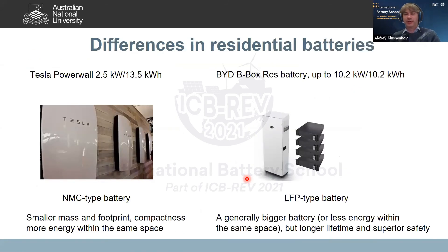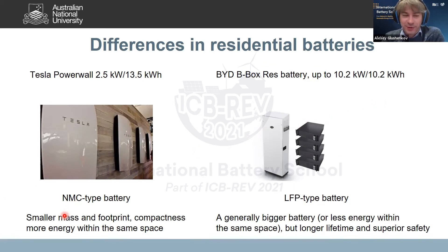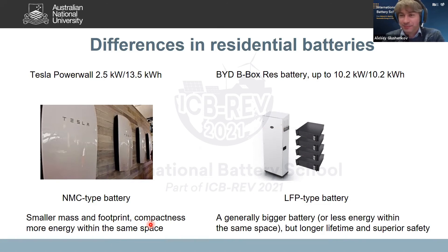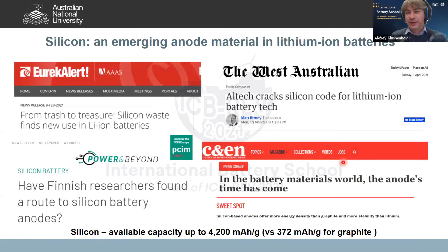In practical terms, consider residential batteries: the Tesla battery uses NMC chemistry and BYD uses LFP chemistry. With NMC, you get a smaller mass and a very compact battery with high energy density — but lifetime may be shorter. With LFP-type batteries, the battery cannot be as compact due to material limitations, but you get superior safety and longer lifetime. Finally, silicon is a strong current trend in industry, with significant challenges but many companies pursuing it with great interest.